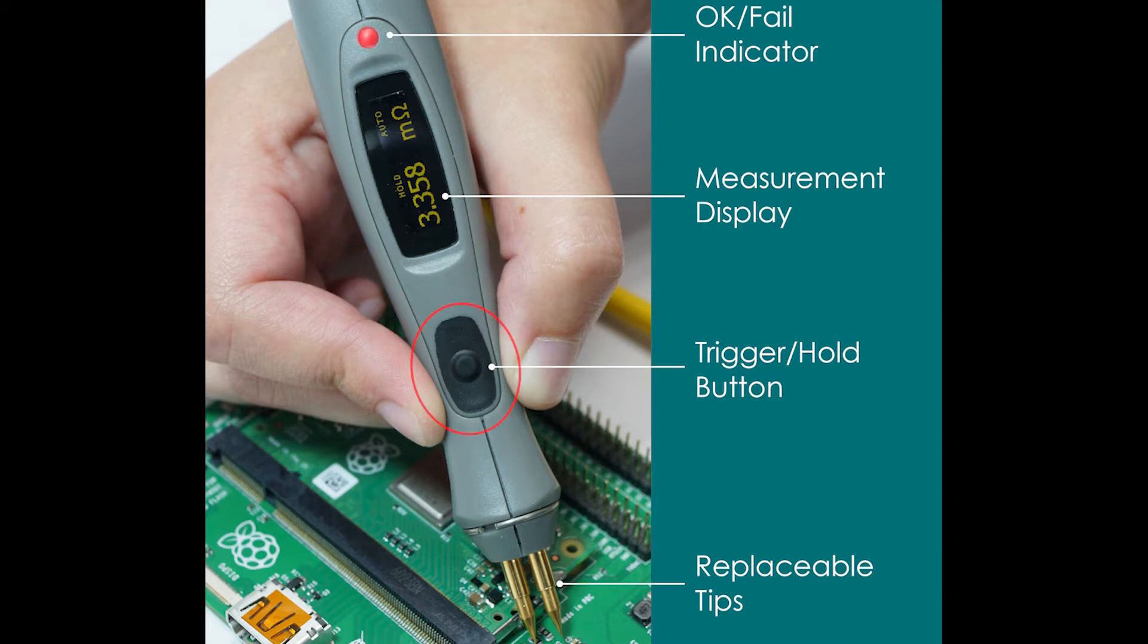Your remote hold button, which functions just like the hold button on the 710A. And your pass-fail LED, which will light green if the measurement is below the test limit and red if the measurement is above the test limit. We'll go over that in a little bit.